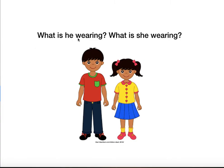What is this boy wearing? He is wearing a t-shirt. What color is his t-shirt? His t-shirt is red with green around the edges. What else is he wearing? He is wearing pants — maybe a special kind of pants called jeans. What does he have on his feet? He is wearing shoes.